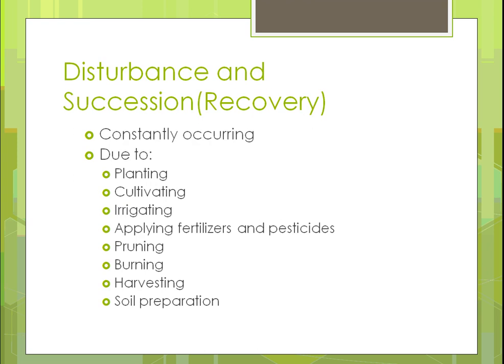Disturbance and succession — recovery is something that's constantly occurring back and forth. You disturb it, then it tries to recover. This happens when you plant, which disturbs the soil; when you cultivate, you're turning the soil; and when you irrigate, you're putting salts in there, changing what nutrients or elements are in the soil, which affects how things grow.